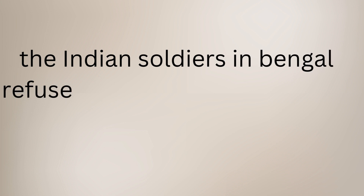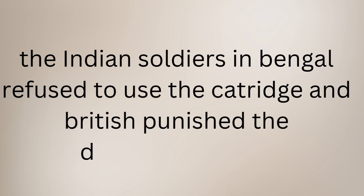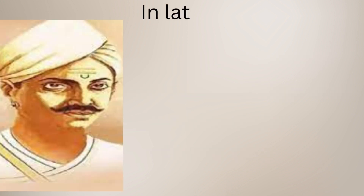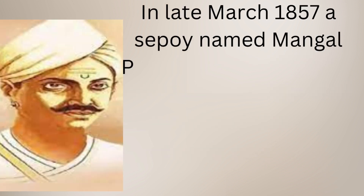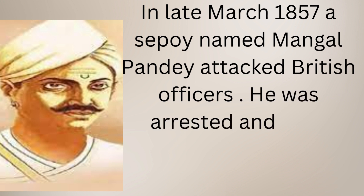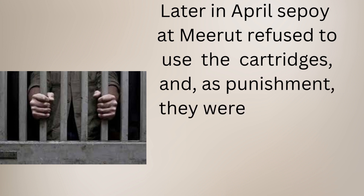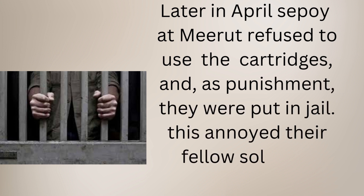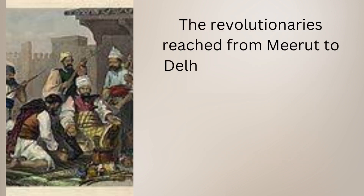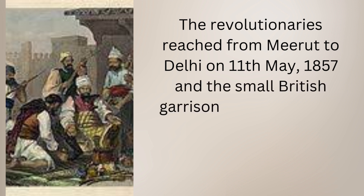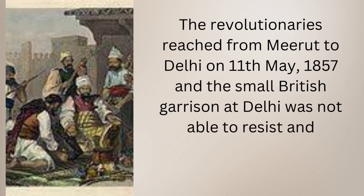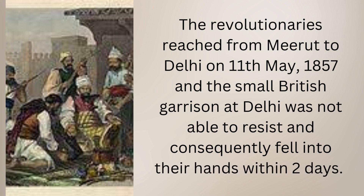The Indian soldiers refused to use the cartridge and the British punished the disobedient ones. In March 1857, a sepoy named Mangal Pandey attacked a British officer. He was arrested and then executed by the British in April. Later in April, the sepoys at Meerut refused to use the cartridges and as punishment were put in jail, which annoyed their fellow soldiers. The revolutionaries then marched from Meerut to Delhi on 11th May 1857, and the small British garrison at Delhi was not able to resist and fell into their hands within two days.